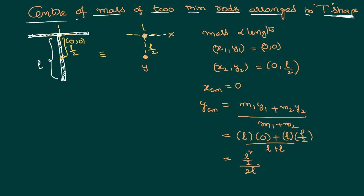Divided by 2L, so we can rearrange this as L squared by 4L. By cancelling L, I can say nothing but L by 4. So the center of mass of this system lies at a particular location which is...